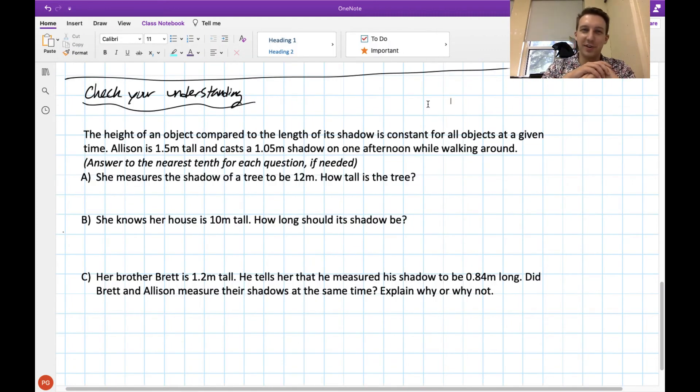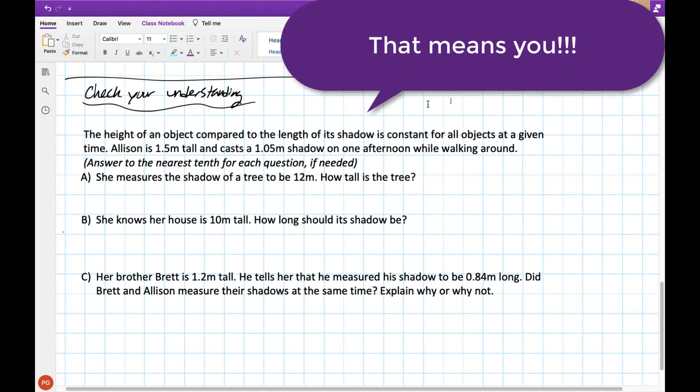Alrighty, folks, let's check your understanding. We got a question up here with three parts where we're talking about the height of objects compared to the length of shadows. And this is one technique for measuring really tall things without having to go up to them and measure them directly. If you can measure their shadow, it allows you to measure their height. So try out these questions, grab a piece of paper, pause the video, and we'll go over the answers in just a minute.